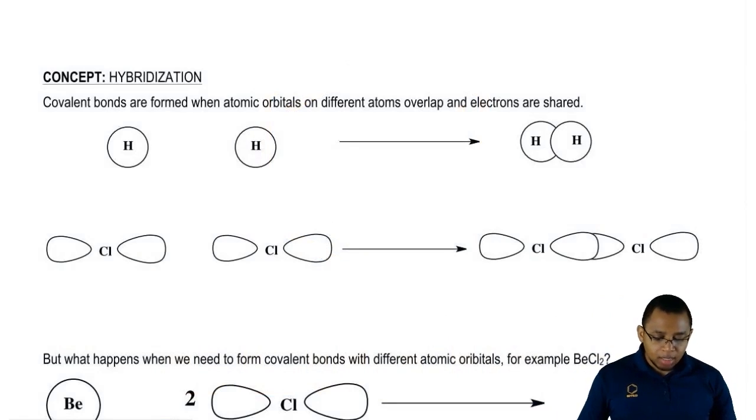Covalent bonds are formed when atomic orbitals overlap with their electrons. For electrons to overlap, they have to be in the same type of orbital. So an S orbital has to overlap with an S orbital. A P orbital has to overlap with a P orbital.